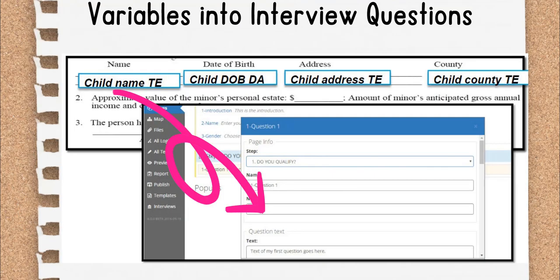These variables are used in both the template and the interview. They are the bridge between the two components of a document assembly package, and between the end user and the completed form. You take those variables and build questions around them. We'll cover more about how to technically do this inside A to J Author, and how to build those questions specifically for self-represented litigants in Section 3 of this course, focused on the interview creation.